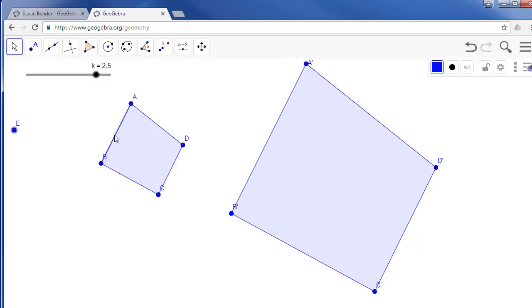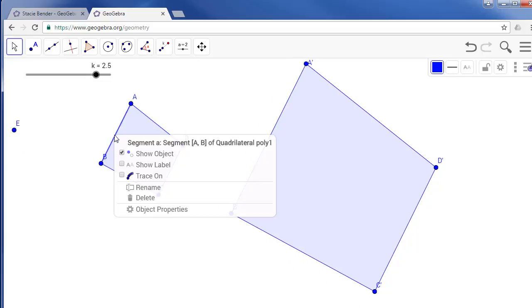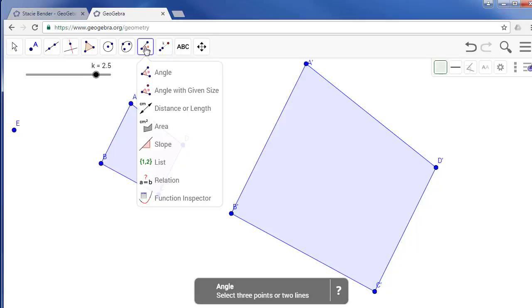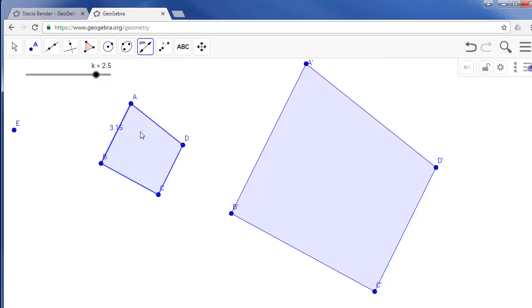So the first side that we created is segment A and its equivalent is segment A prime. Let's measure two of our side lengths. If we choose the measure tool for distance or length, we select a side length that was side A. We'll also select side A prime and we're going to allow or ask GeoGebra to calculate the difference or the ratio of those two lengths.